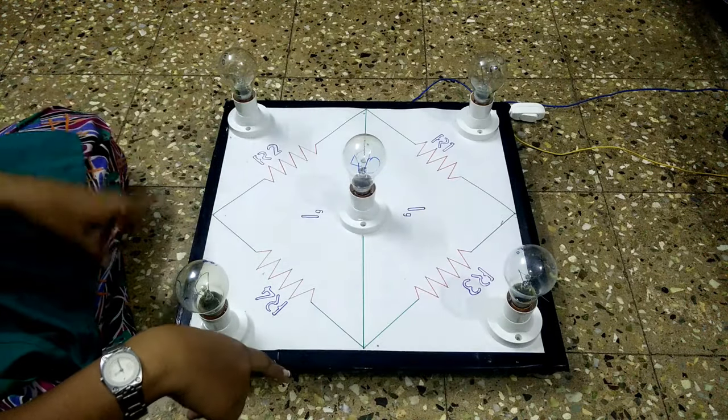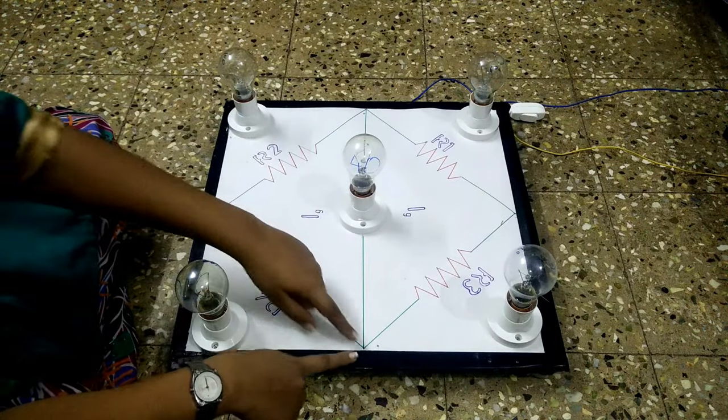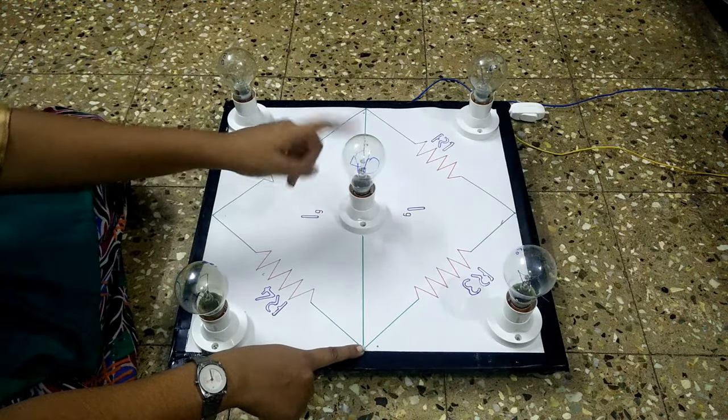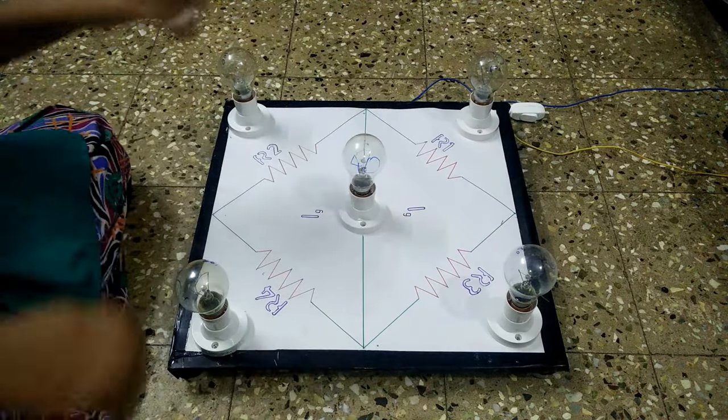But when the ratio is unbalanced, there is some minimal current flowing through this path which excites the bulb and it starts to glow. Now let me switch it on.